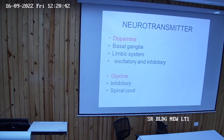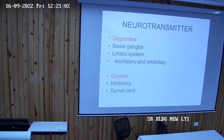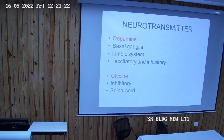Dopamine in the basal ganglia acts both as an excitatory and inhibitory neurotransmitter. The neurons of the basal ganglia receiving the nigrostriatal pathway express two types of dopamine receptors: D1 and D2. Dopamine acting through D1 receptors is excitatory; dopamine acting through D2 receptors is inhibitory. So depending on receptor type, dopaminergic input can cause either excitation or inhibition.